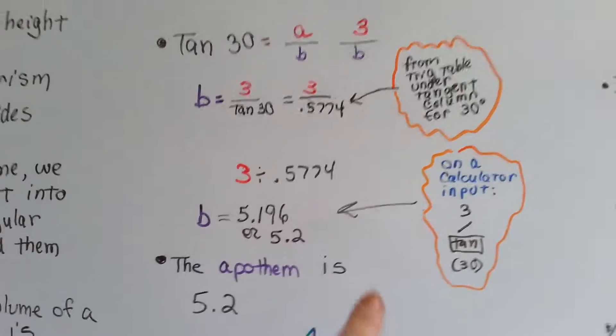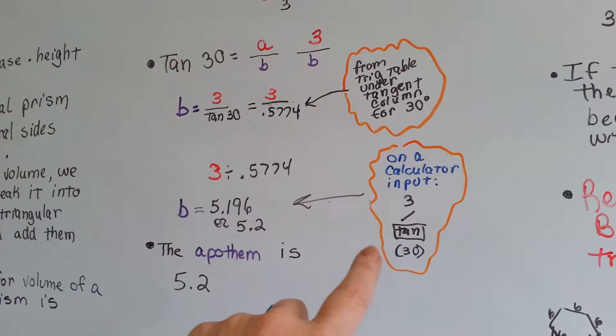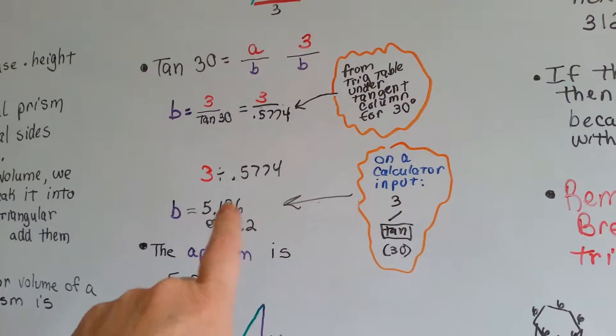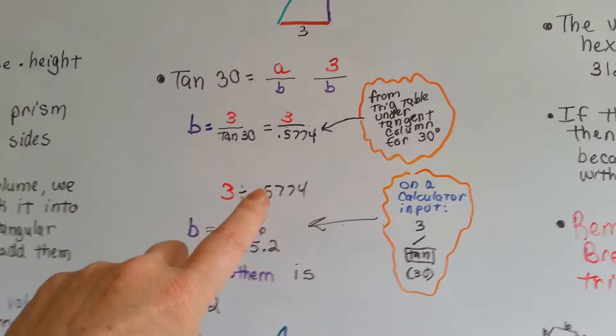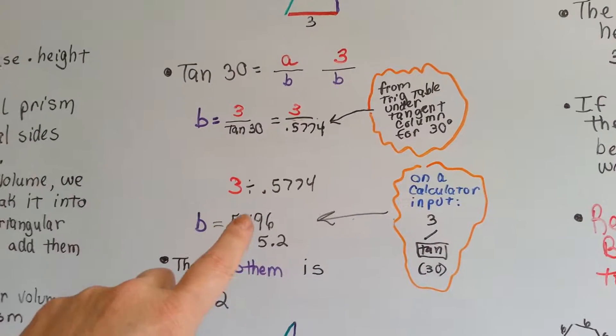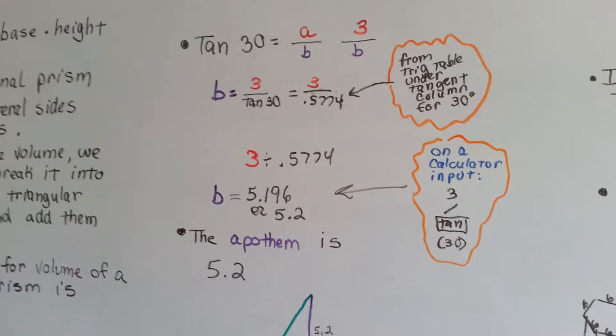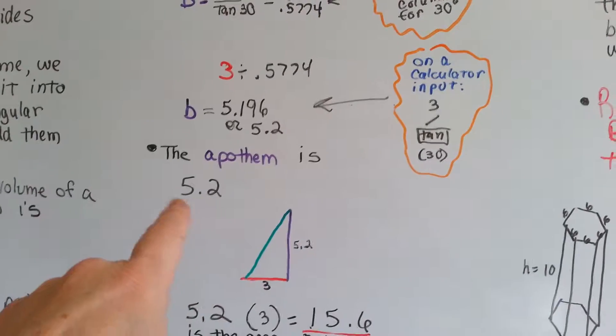If you do have a calculator, you put in 3, the division sign, tangent button, and then you put in 30, and you get the same thing. 3 divided by 0.5774 comes out to 5.196, or we'll say 5.2 to round it up. So our apothem is 5.2.